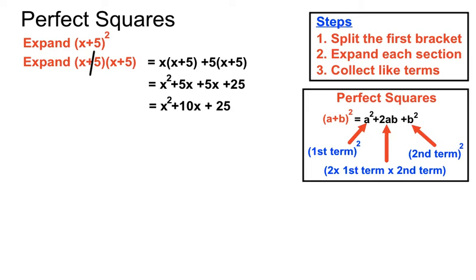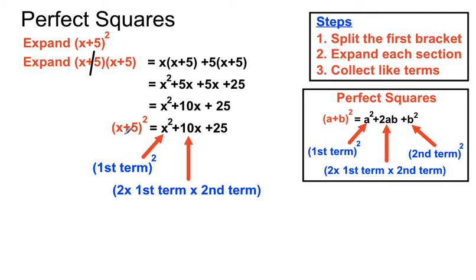We get x squared plus 10x plus 25, and we can express that last term as 5 squared. This follows the general rule: the first term x is squared, plus two lots of x times 5 giving 10x, plus 5 squared giving 25. The long result and the shortcut version give the same result. If you remember the shortcut, you'll save time in a test when one bracket is multiplying by itself.